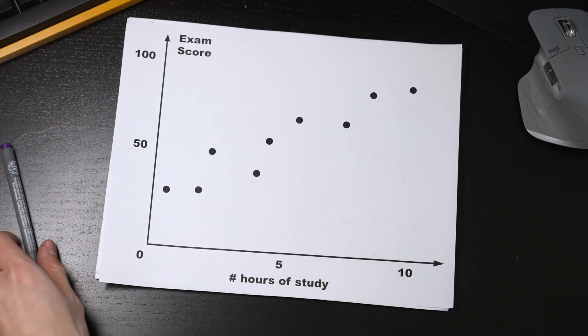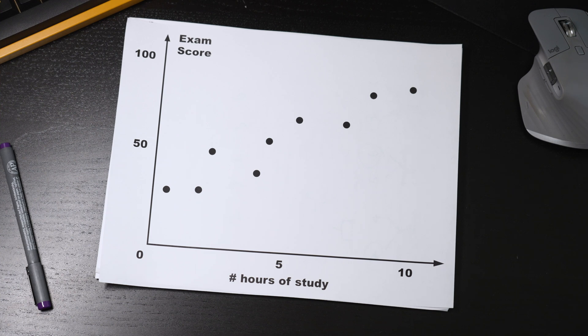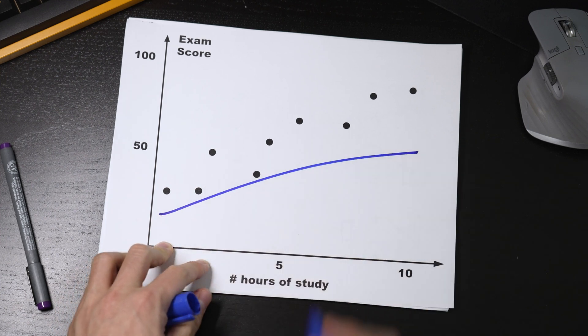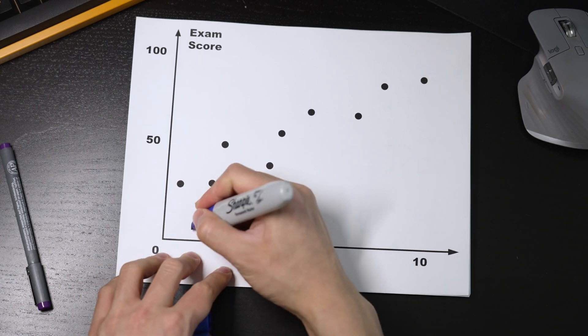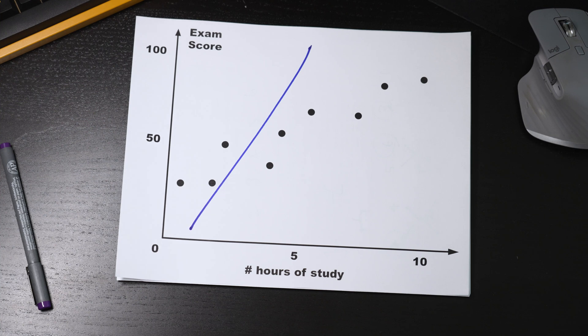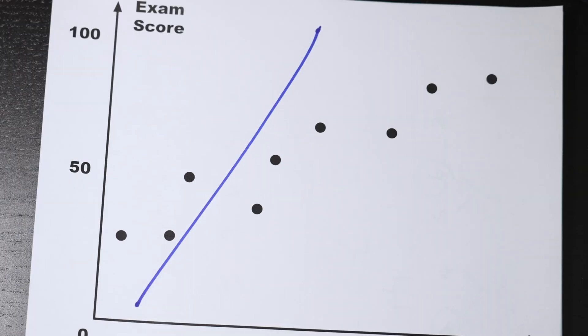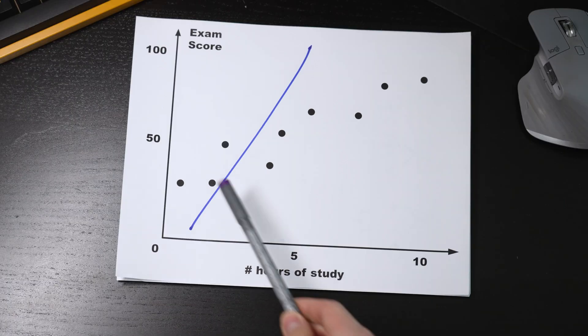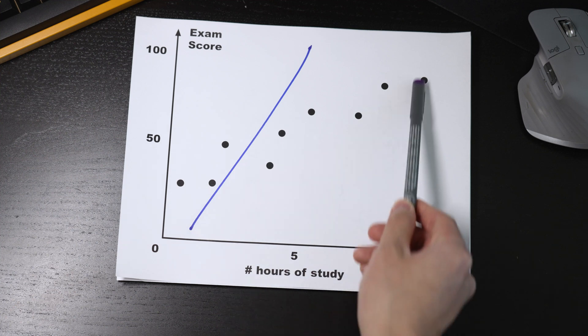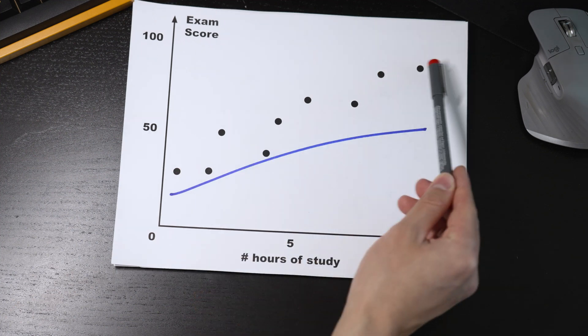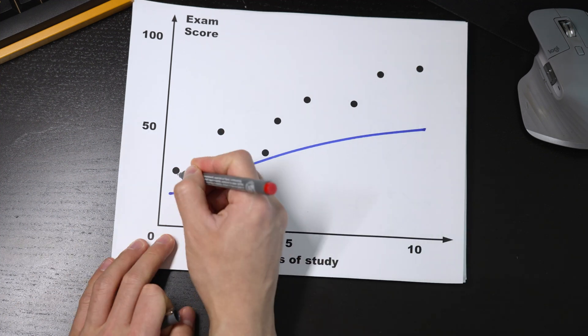But how do you get the best fitting line? It's important because what if I did this, or this? I'm exaggerating, but do you think this line is good at predicting the exam scores? Probably not. Intuitively, we want the line to be as close to the training data as possible, aka drawing the best fitting line.